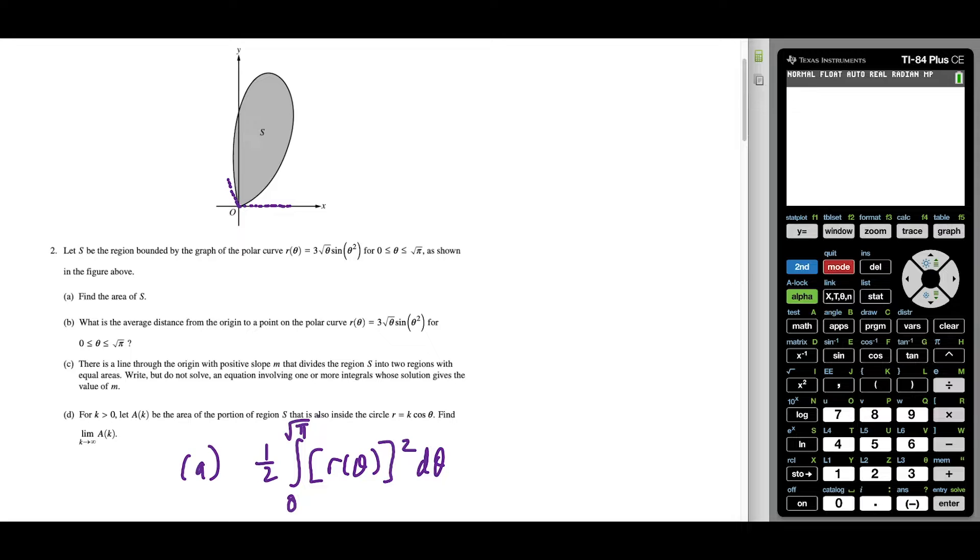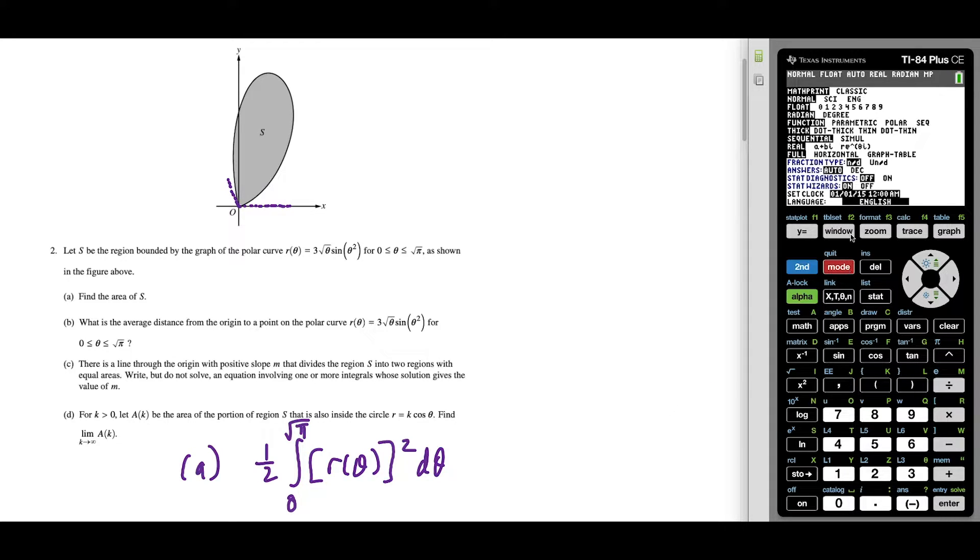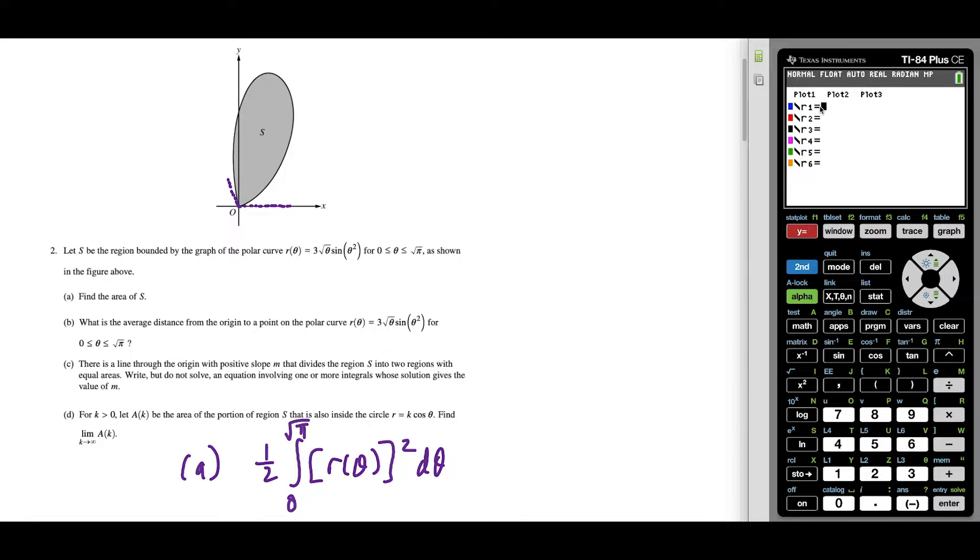And what we have to do to type this in, we're going to switch over to polar mode. So I'm going to press mode and I'm going to switch down here from function to polar. And that way, when I go to the y equals, everything is an r equals form. And our equation is three times the square root of theta. I hit the right arrow to get out of that. And then we've got sine of theta squared. So there's our equation. And it's saved in the r one equals.